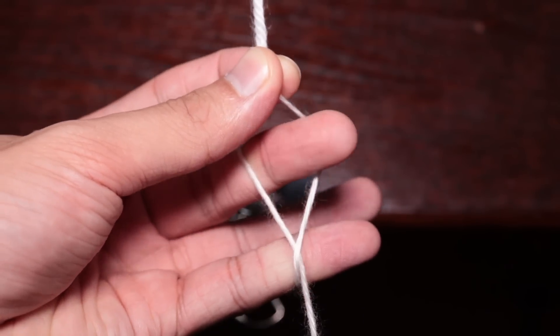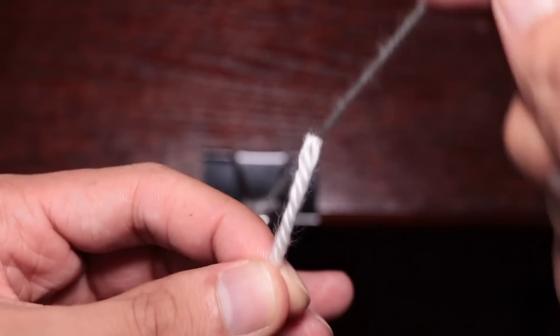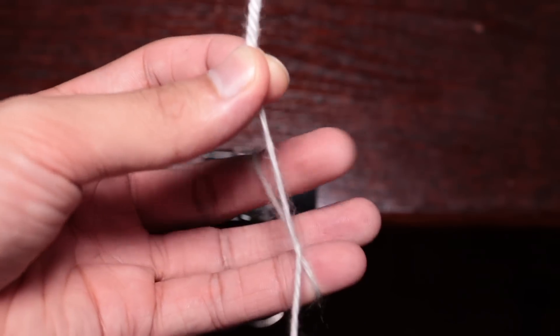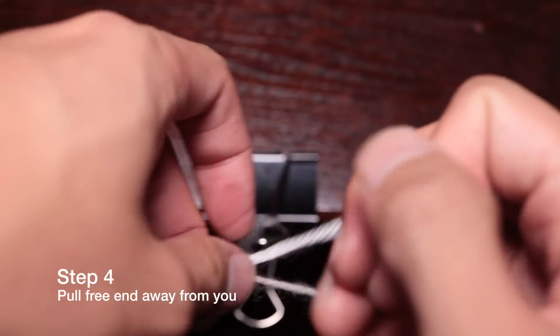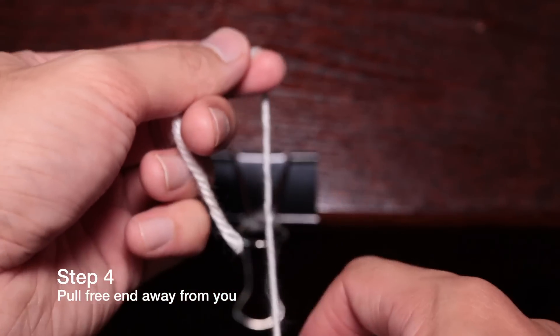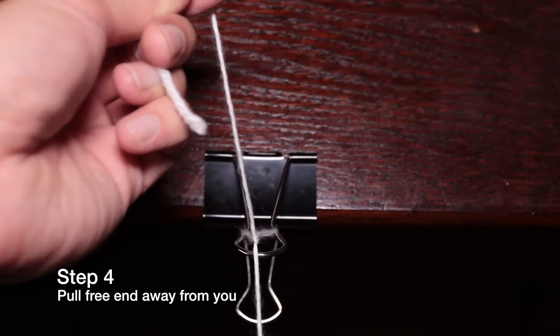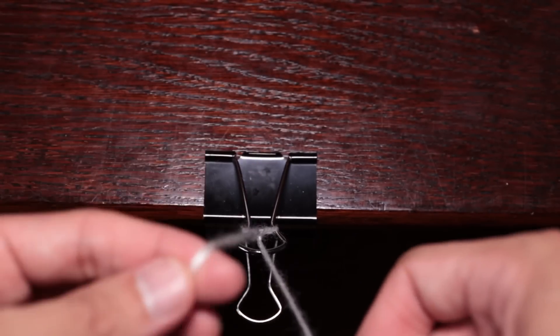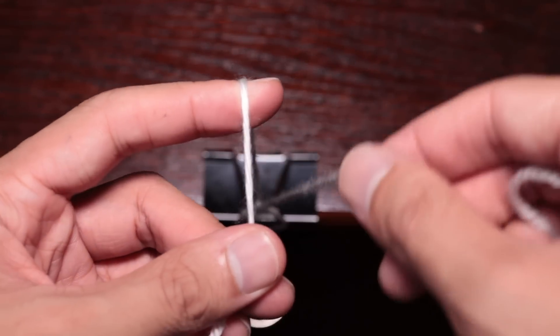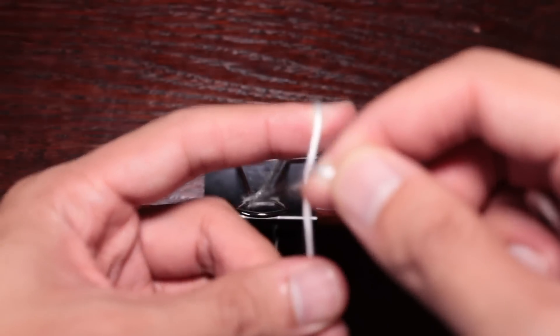Then you're just going to pull it through just like you did in the first knot, pull it through with your middle finger and away from you. When you're doing the middle finger knot you're always going to pull the free end away from you and then you're back in the initial position to do the index knot.